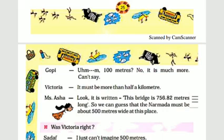Was Victoria right? Victoria's answer was half a kilometer. One kilometer is 1000 meters, so half a kilometer is 500 meters. The Narmada is about 500 meters wide, so yes, Victoria is right. We will cover the next topic in the next video. Thank you!